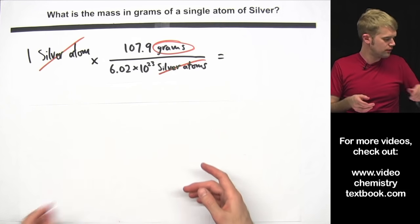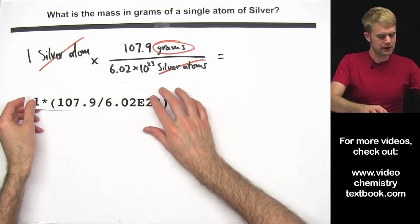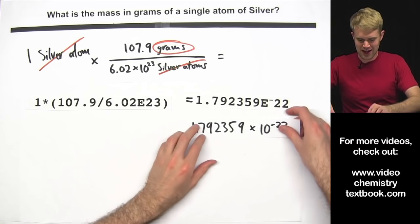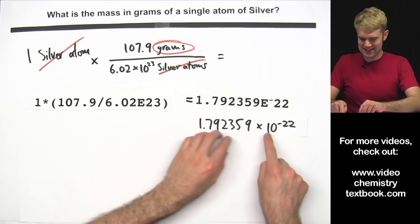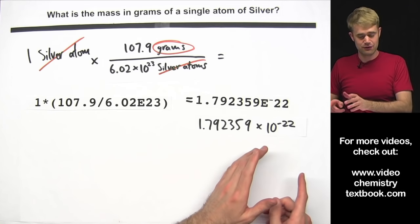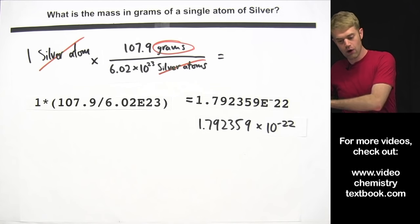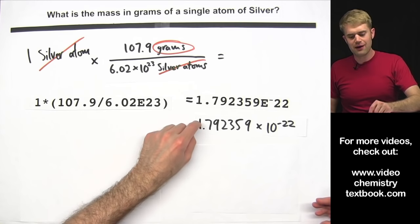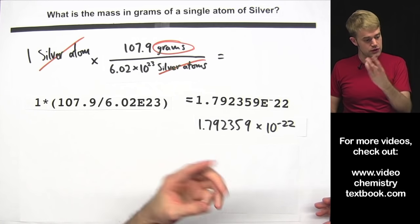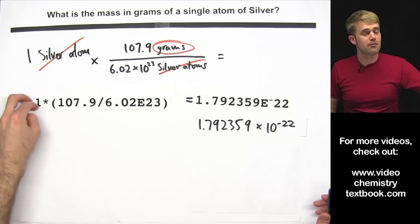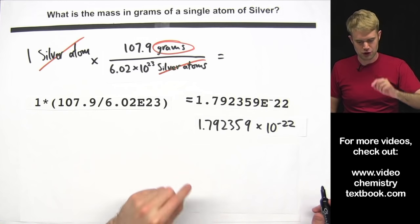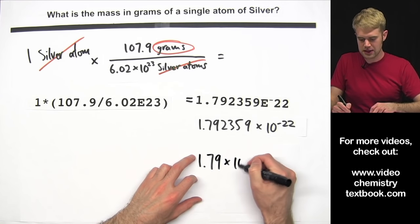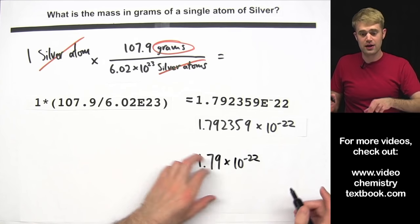Now that we've written this out, we can solve it with a calculator. You can type it in, and we'll get a result which is the calculator's way of expressing a number times 10 to the negative 22nd. All we have to do now is round using significant figures, since calculators don't do rounding. We're going to round to three significant figures. We don't worry about the number of significant figures in the one because it's a counting number, not a measurement. So we get 1.79 times 10 to the negative 22nd.